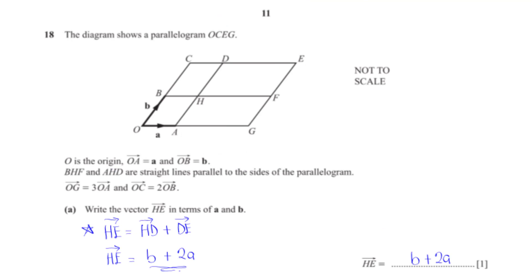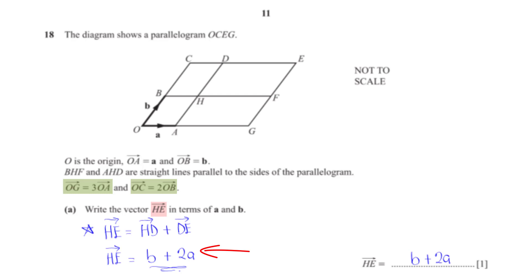The diagram shows a parallelogram OCEG. O is the origin, OA equals vector a, OB equals vector b. OG equals 3 times OA and OC equals 2 times OB. Write the vector HE in terms of a and b. Vector HE equals HD plus DE; HD equals b and DE equals 2a, so HE equals b plus 2a.